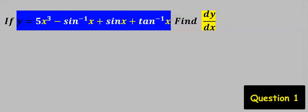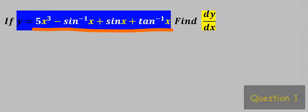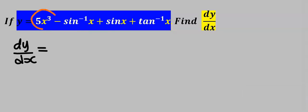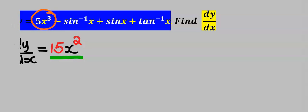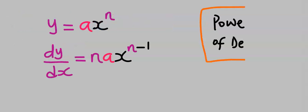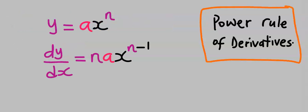Let's find the derivative of this function. Differentiating 5x to the power of 3, we get 15x to the power of 2, which we have differentiated using the power rule of derivatives.